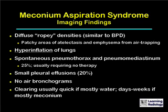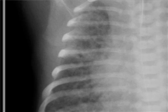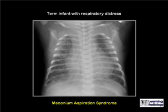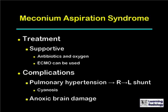Clearing is usually quick if the aspirate contains mostly water; it can take days or weeks if it contains mostly meconium. This is an example of meconium aspiration syndrome — you can see thick, rope-like densities throughout both lungs and the child is hyperinflated. Treatment is supportive, including antibiotics and oxygen; sometimes extracorporeal membrane oxygenation is used. Complications include pulmonary hypertension, which can lead to a right-to-left shunt, cyanosis, and anoxic brain damage.